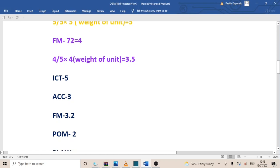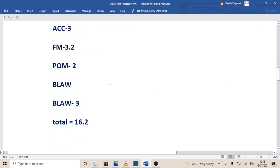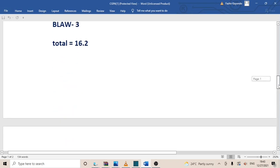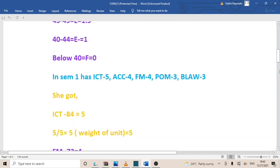And then ICT, assuming that she got a 5, which is 80, then Accounting upon calculating she got a 3. FM we already got 3.5. And then POM she got a 2, and then BLAW she got 3, giving me a total when I added the 3 plus 2 plus 3.5 plus 3 plus 5, I'm going to get 16.5.